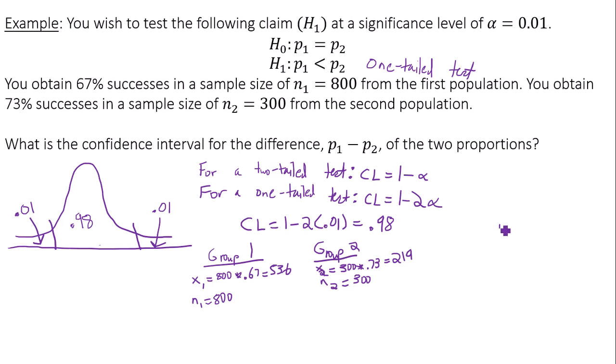So let's write out this confidence interval. The difference of the two proportions, the lower limit is negative 0.13, and the upper limit is 0.01.